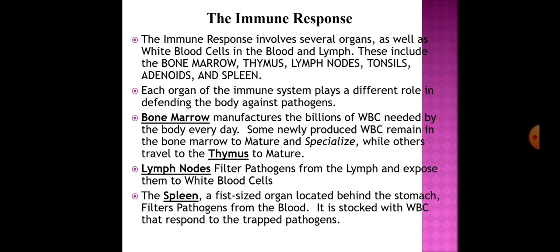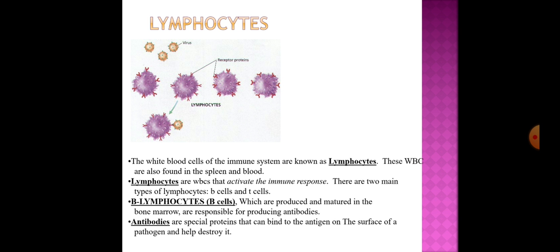Lymph nodes filter pathogens from the lymph and expose them to white blood cells. The spleen, a fist-sized organ located near the stomach, filters pathogens from the blood and is stocked with white blood cells that respond to the trapped pathogens. The white blood cells of the immune system are known as lymphocytes, found also in the spleen and blood, and they activate the immune response.